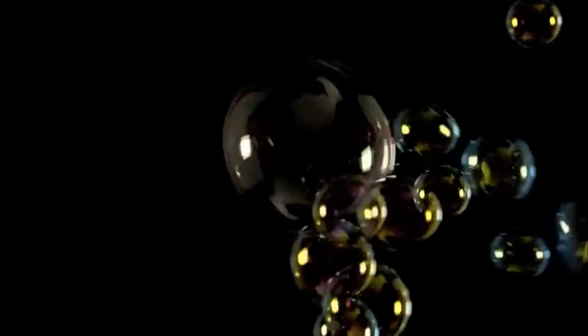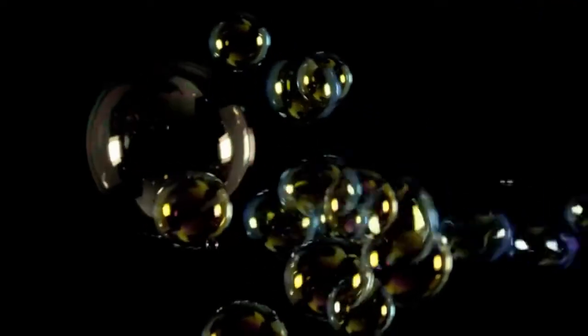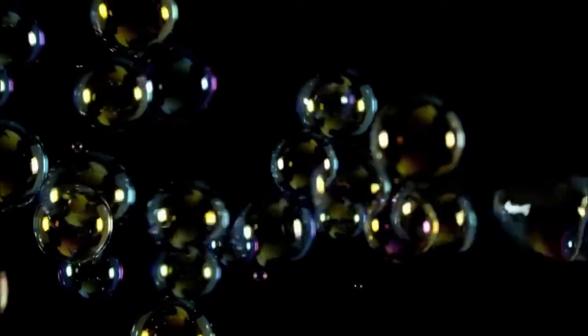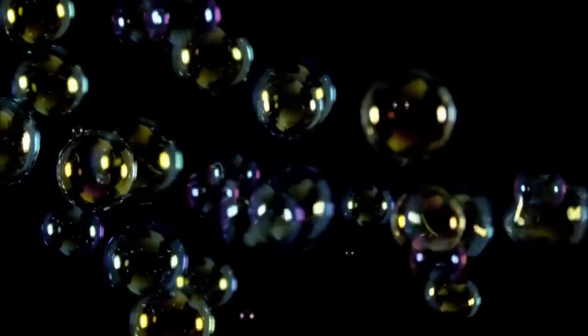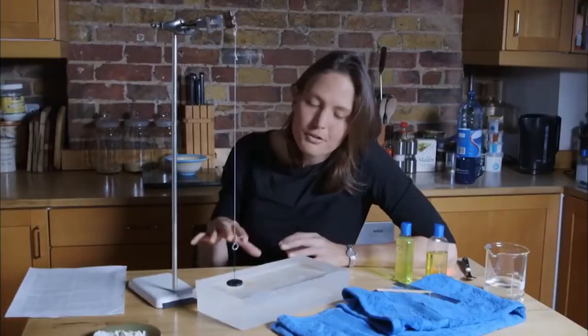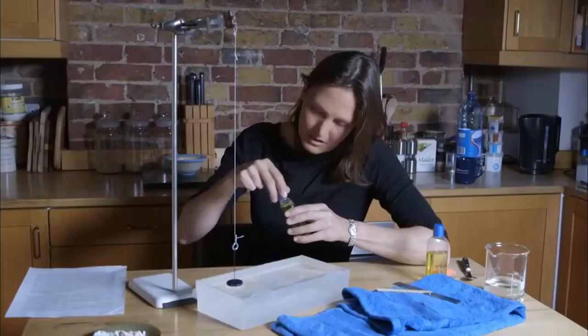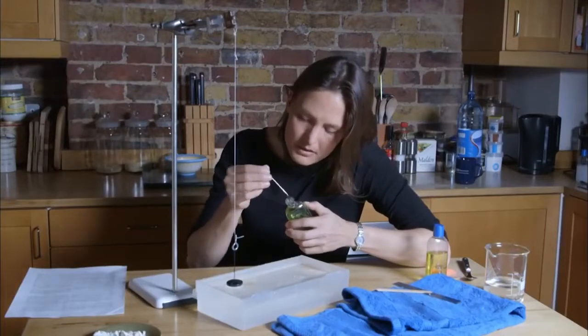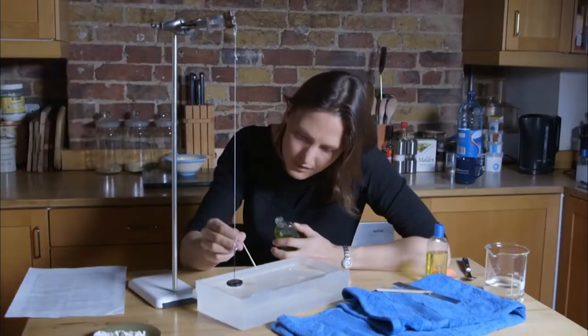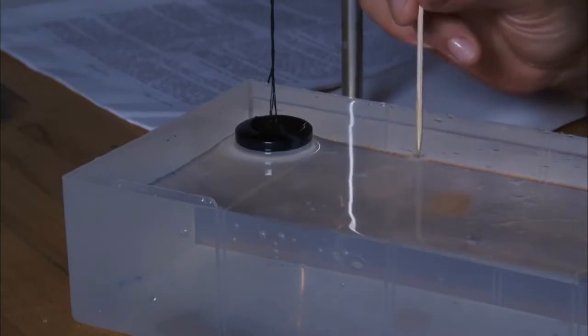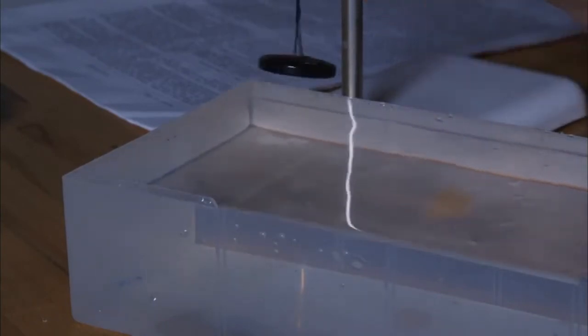But what Agnes did next was the really clever bit, and it would be the key to understanding soap bubbles, why they exist and what they do. Agnes realised that you could also use this device to measure how surface tension changed in different situations. So what she did was she contaminated the surface. This is just detergent. So I'm just going to put a few spots of it nearby, and as I put them on the water surface, the detergent is lowering the surface tension, and so the button will pop off the surface.